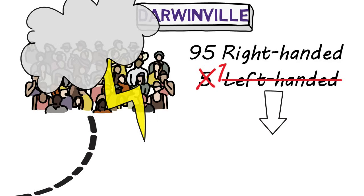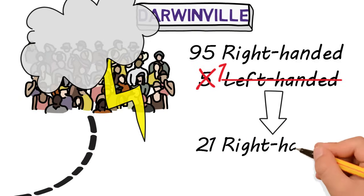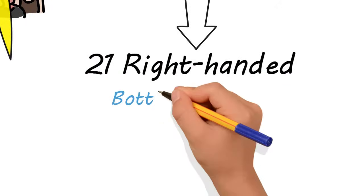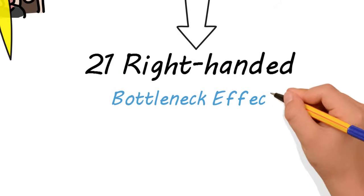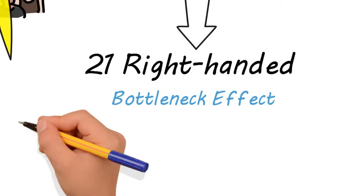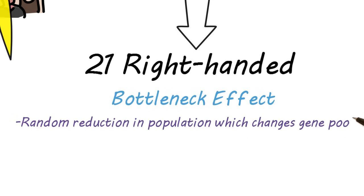The new population, now 21 individuals, will have no left-handed posterity from this point on. This is an example of the bottleneck effect, when there's a random reduction of the population due to some random event.